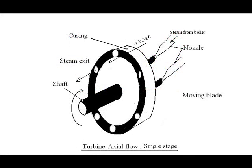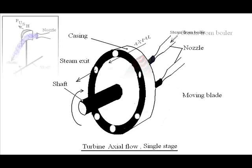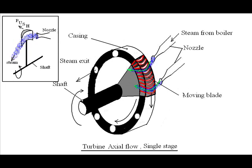The axial-flow steam turbine has three basic components: the casing, the shaft, and the nozzles. In axial flow, after exiting the nozzle, steam flows over the turbine blades in a direction parallel to the axis of rotation of the shaft — this is why it is called an axial-flow turbine. In the cut section, we can see steam shown in blue coming out of the nozzle and gliding over the blades, which get a push in the tangential direction.